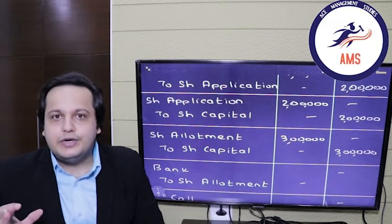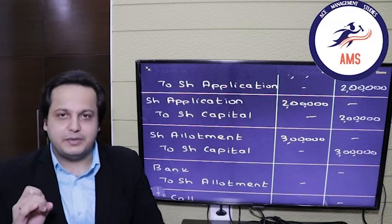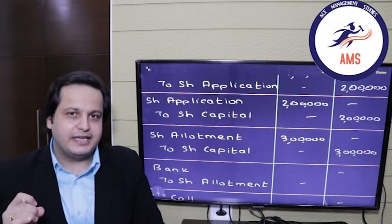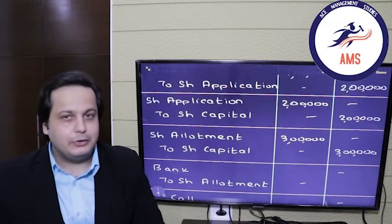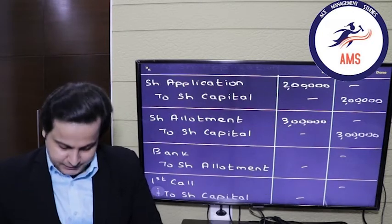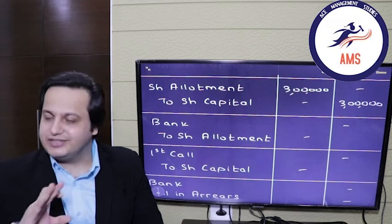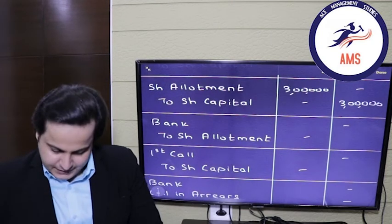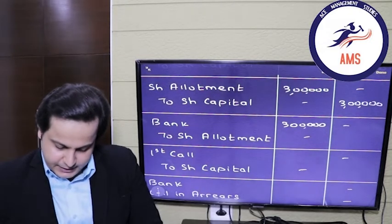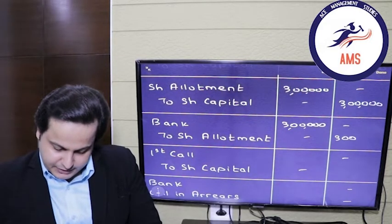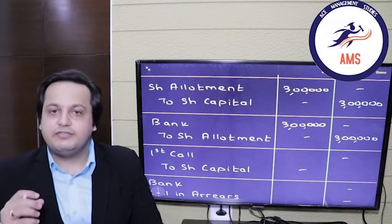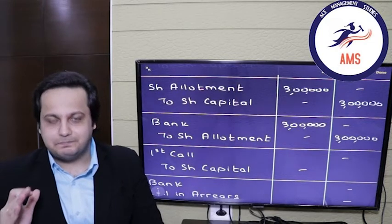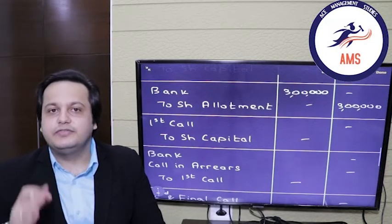Now there was no default in allotment, so we will receive each and every rupee. The next entry is receiving the allotment money. Entry: bank account debit to share allotment account credit — we are receiving the whole 3 lakh rupees. Bank debited by 3 lakh, allotment credited by 3 lakh rupees. The share allotment account now has a closing balance of zero.